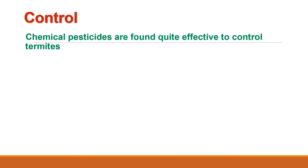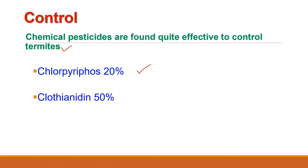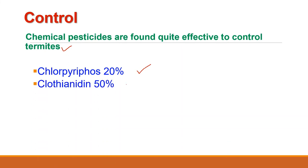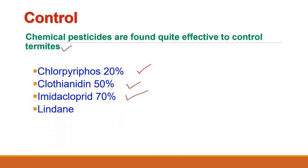Regarding control, chemical pesticides are quite effective to control termites. The termite infestation can be controlled by chlorpyrifos 20%, clothianidin 50%, imidacloprid 70% and lindane, which are quite effective in controlling termite infestation.